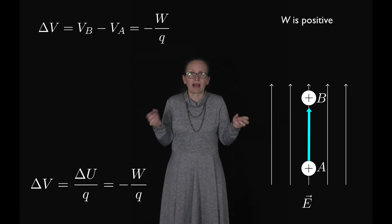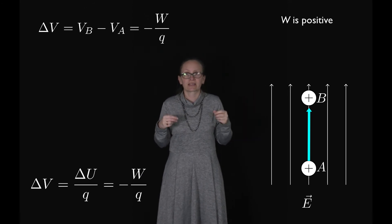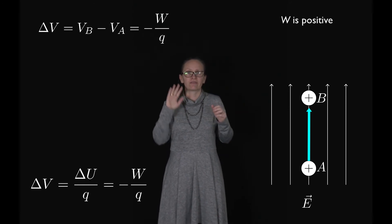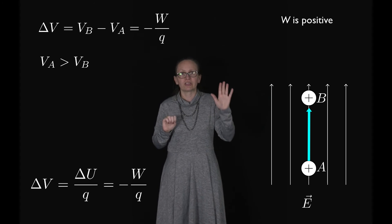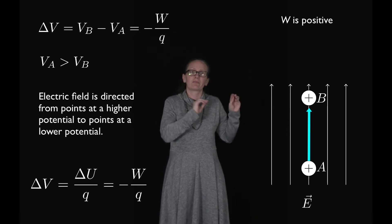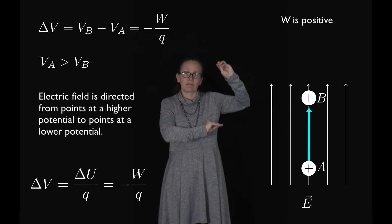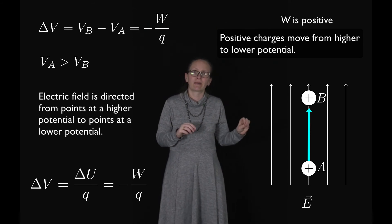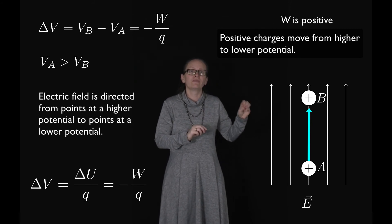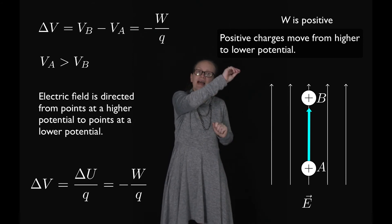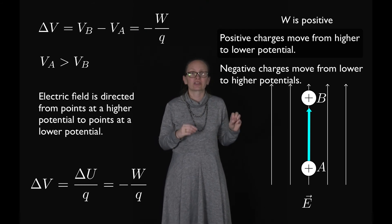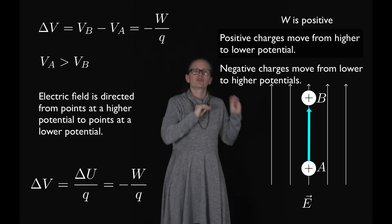Since the electrostatic work done is positive, the change in voltage must be negative, meaning the voltage at B is lower than the voltage at A. We can conclude that an electrostatic field is directed from points at a higher potential to points at a lower potential. A positively charged particle placed in a voltage field will move from higher potential to lower potential, while a negatively charged particle will move from lower potential to higher potential.